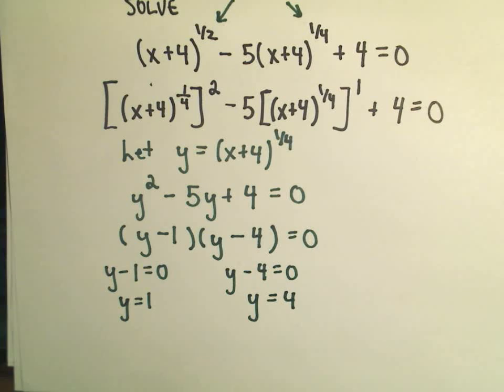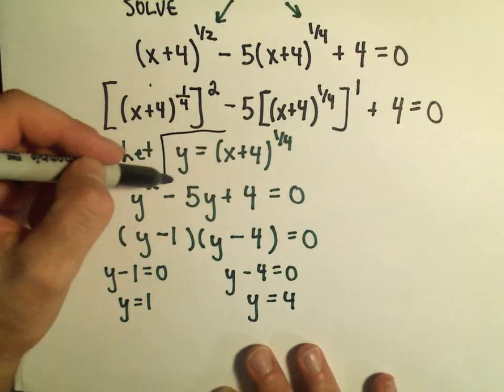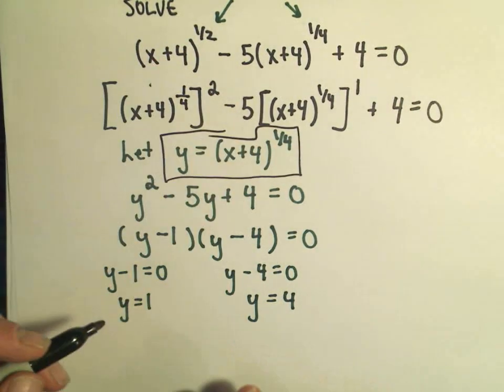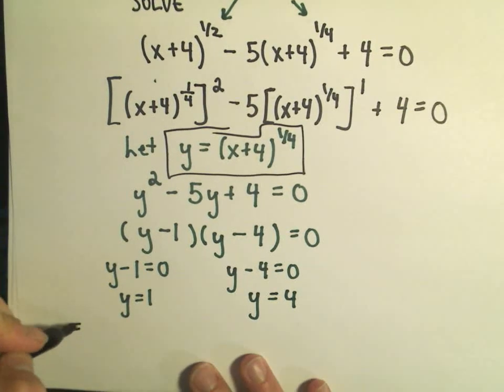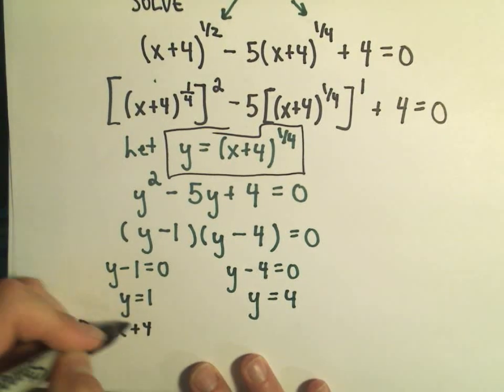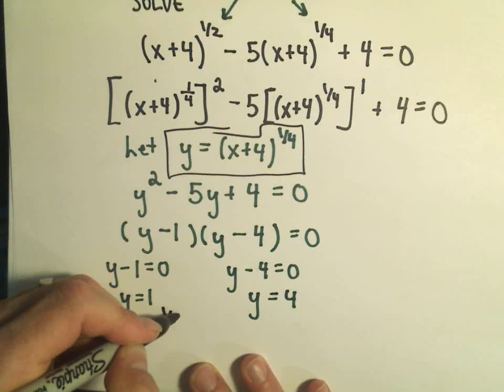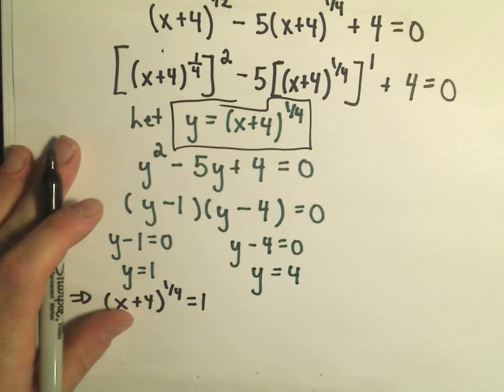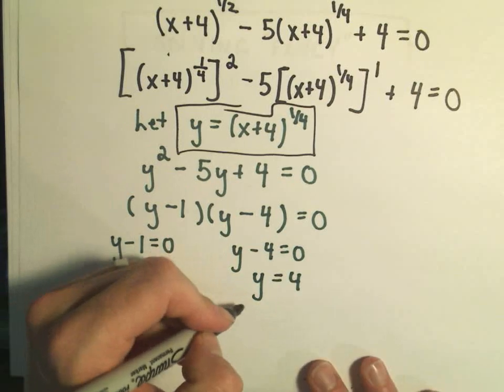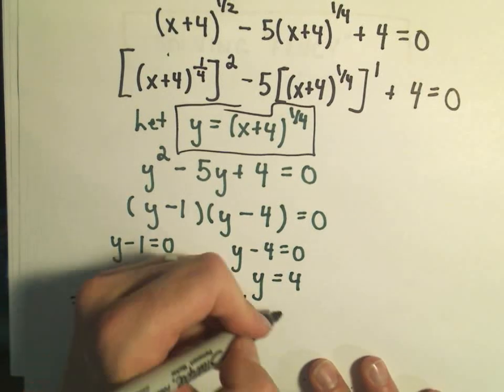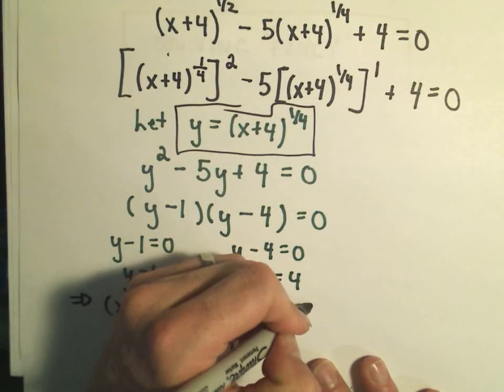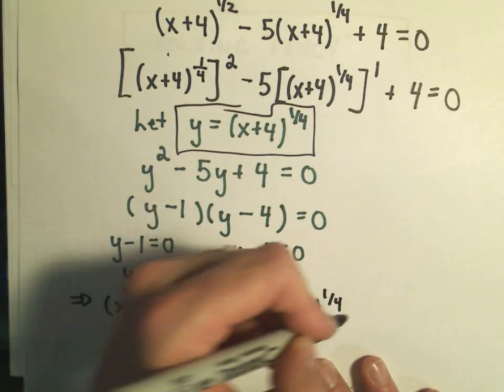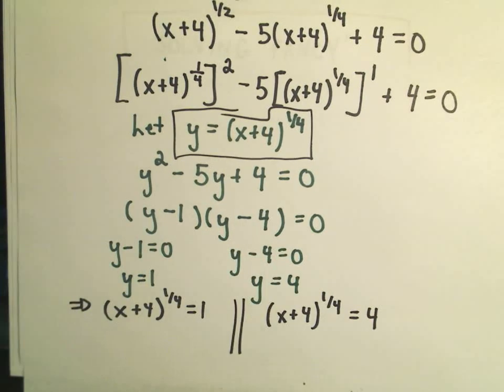And again, now I'm going to go back and kind of unsubstitute. So, we said y is x plus four to the one-fourth. So that means we have x plus four to the one-fourth. We're going to have to solve this equation. We'll set that equal to one. And then we also have to take, so for our other part, we'll have to take x plus four to the one-fourth and set that equal to positive four.